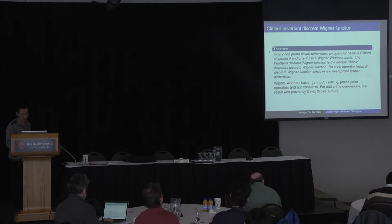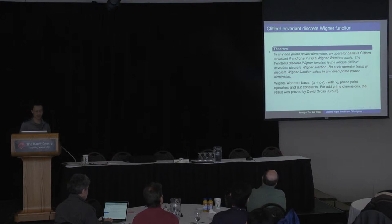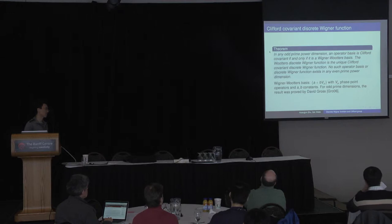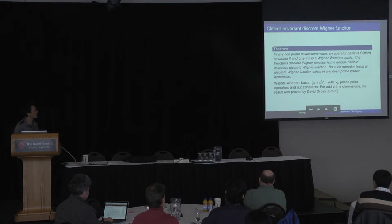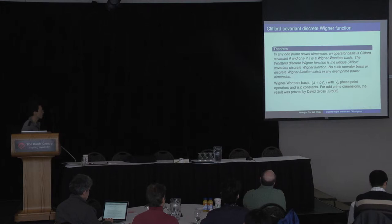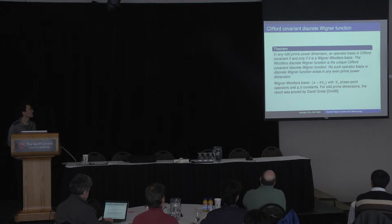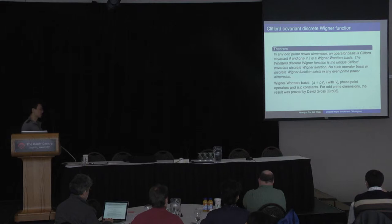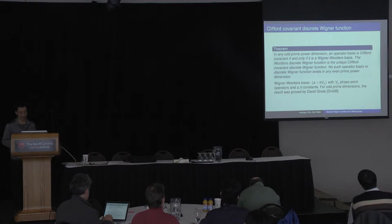Here's the first result about the Clifford covariant discrete Wigner function. As mentioned previously, the discrete Wigner function is Clifford covariant. It turns out it is also uniquely defined by Clifford covariance, up to a trivial shift and scaling. For all odd prime-power dimensions, the uniqueness was proved by David Gross for all odd primes. I generalize this to all odd prime-power dimensions, and also prove that no such Wigner function can exist in even prime-power dimensions. Since the focus is on the connection with unitary design, I will focus on the non-existence result.